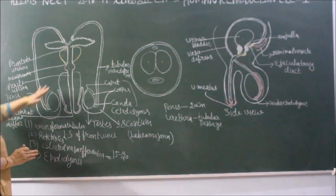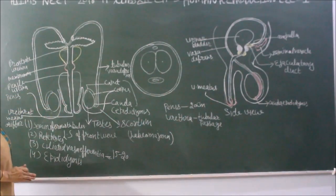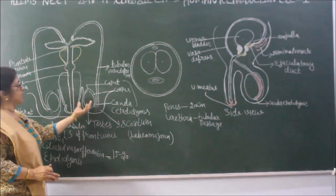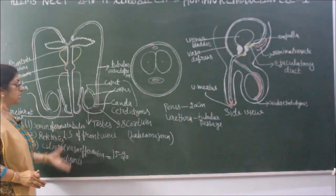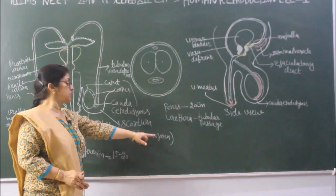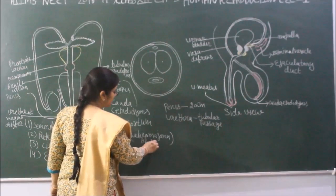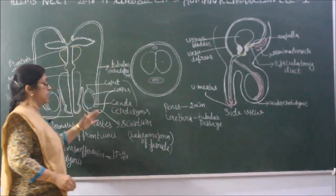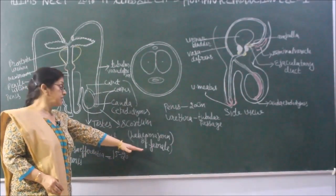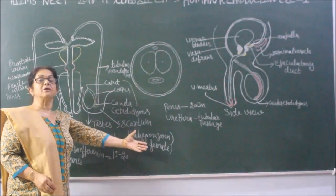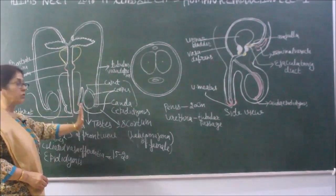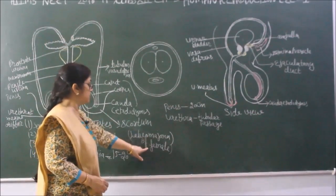The testes are present in the scrotum. The scrotum is an organ that protects the testes, and it is homologous to the labia majora of the female. Just as the scrotum covers the external genital organs of the male, the labia majora covers the external genital organs of the female. Similarly, the testes are equivalent to the ovaries.